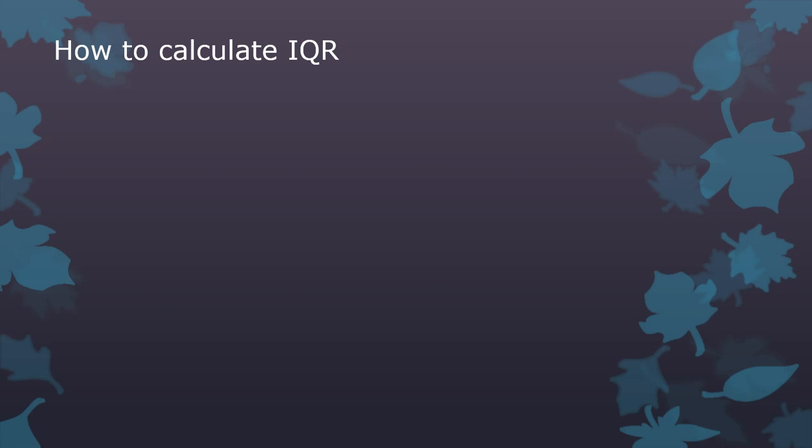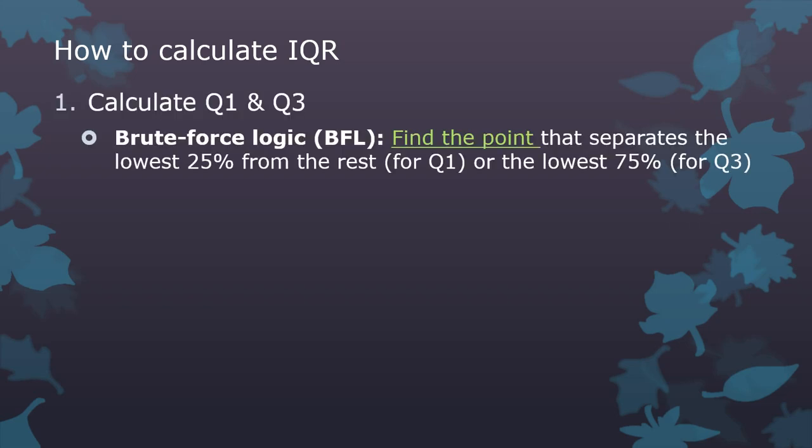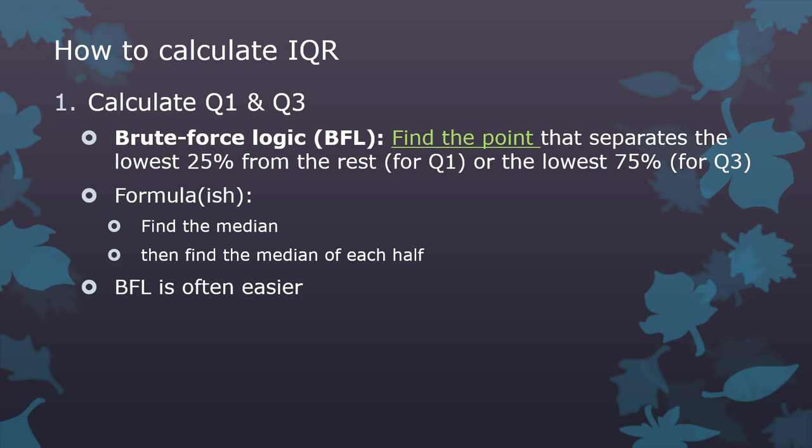Calculating the IQR, you calculate Q1 and Q3. The brute force logic version is you just find the point that separates the lowest 25 from the rest for Q1, or the lowest 75 or the highest 25 to find Q3. The formula is you find the median, then find the median of each of the halves that's left over. With simple data that's not really confusing, sometimes the brute force logic version is easier, but computers can do this too, but people don't agree on exactly how it should be done in certain situations. Software does it best.